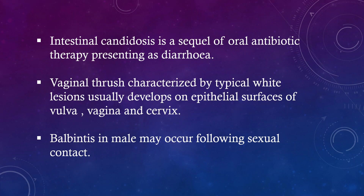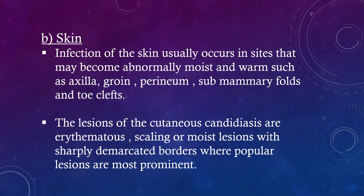Balanoposthitis in males may occur following sexual contact. Skin: Infection of the skin usually occurs in sites that may become abnormally moist and warm, such as the axilla, groin, perineum, submammary folds, and toe clefts. The lesions of cutaneous candidiasis are erythematous, scaling or moist lesions with sharply demarcated borders, where papular lesions are most prominent.